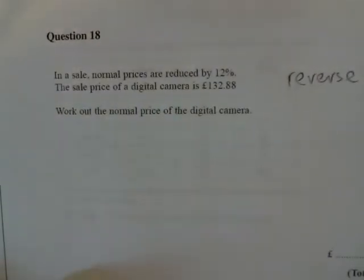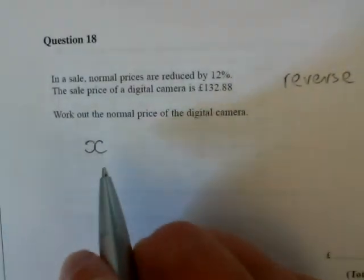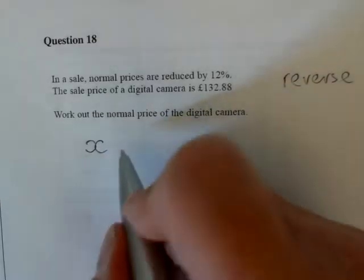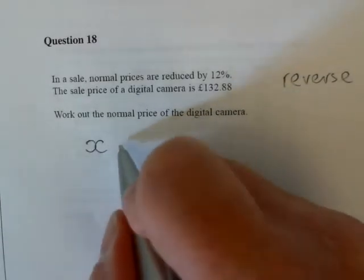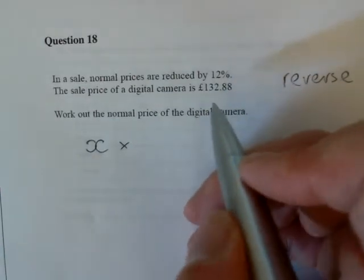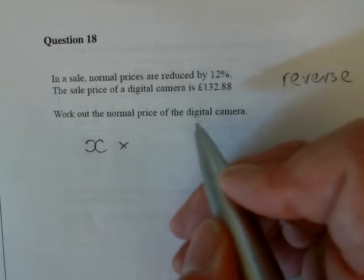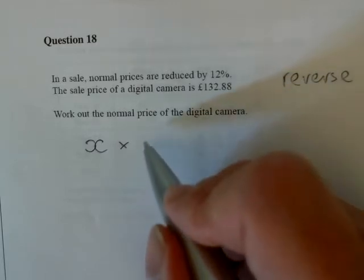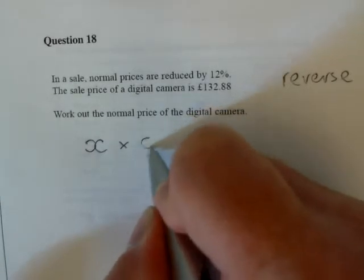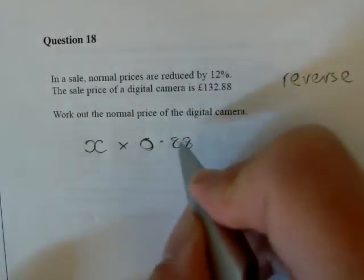The amount that we had to start with is unknown. The price of the camera before the reduction, we'll call it X. We reduce it by 12%. If you take 12% away from what you have to start with, that would leave you 88%. So it's got 12% off, so it's only worth 88% of what it was worth previously. And if we change 88% into a decimal, we'll get 0.88.